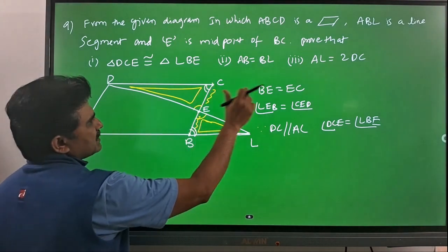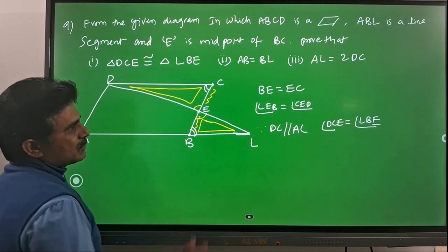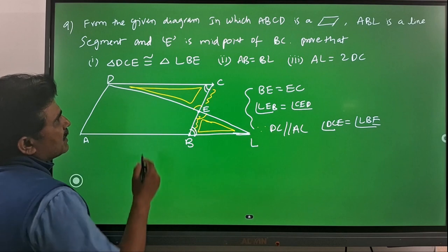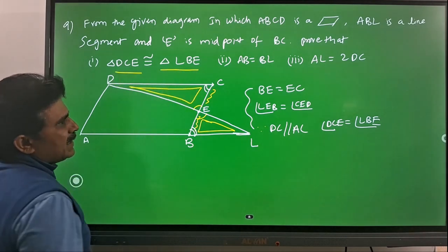We have two angles equal here and one side also equal. We got three equalities for these two triangles, so we can easily say that triangle DCE is congruent to triangle LBE.